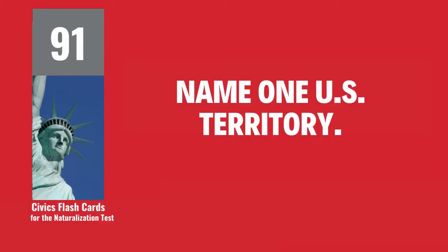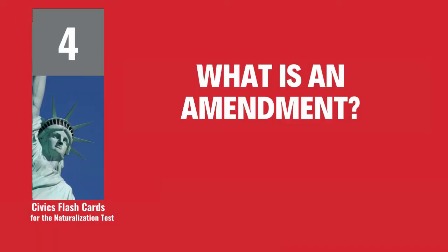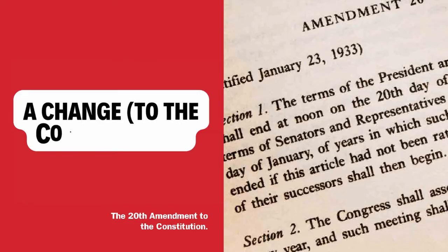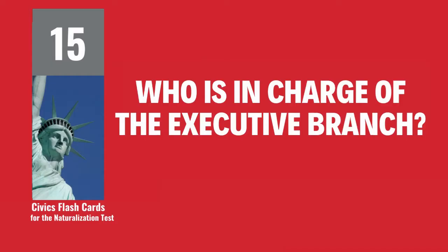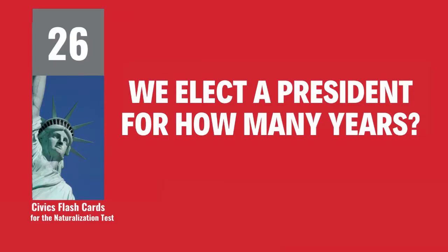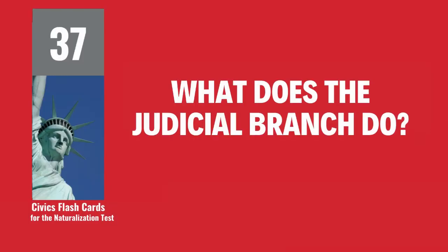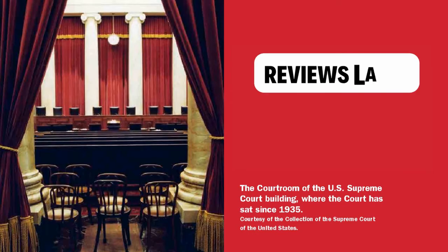Name one U.S. territory. Puerto Rico. What is an amendment? A change to the Constitution. Who is in charge of the executive branch? The President. We elect a president for how many years? 4. What does the judicial branch do? Reviews laws.